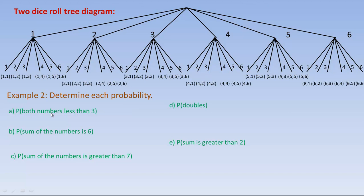The first probability, A, is the probability that both numbers are less than three. Both numbers less than three would include one-one and one-two, and two-one and two-two, but not one-three or anything beyond that, because at that point we get numbers bigger than or equal to three. So there are only four possibilities out of all 36 rolls where both numbers are less than three. That gives four out of 36, which reduces to one ninth — a one in nine chance.